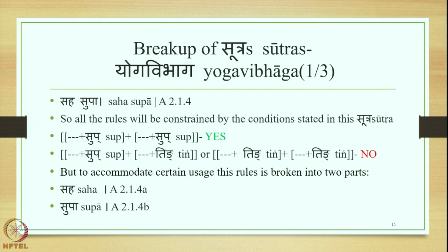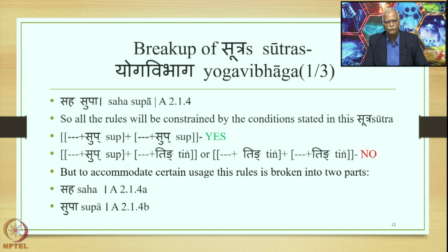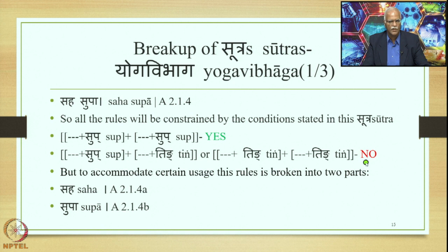Let us now study the breakup of Sutras, Yoga Vibhaga, as one of the means resorted to by the tradition. We once again take up Sahasupa 2.1.4. All rules are constrained by the conditions stated in this Sutra: if you have two Padas with Supes at the end, we say yes for compounding. But if you have Sup plus Ting or Ting plus Ting, the system says no. To accommodate certain usage of precisely this kind, the rule is broken into two parts: 2.1.4a is Saha, and 2.1.4b is Supa.